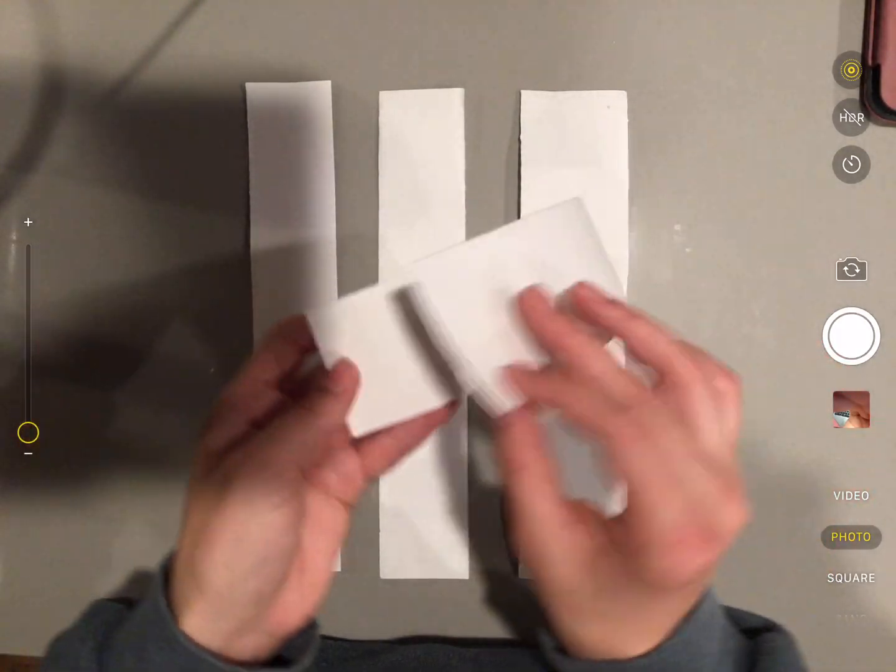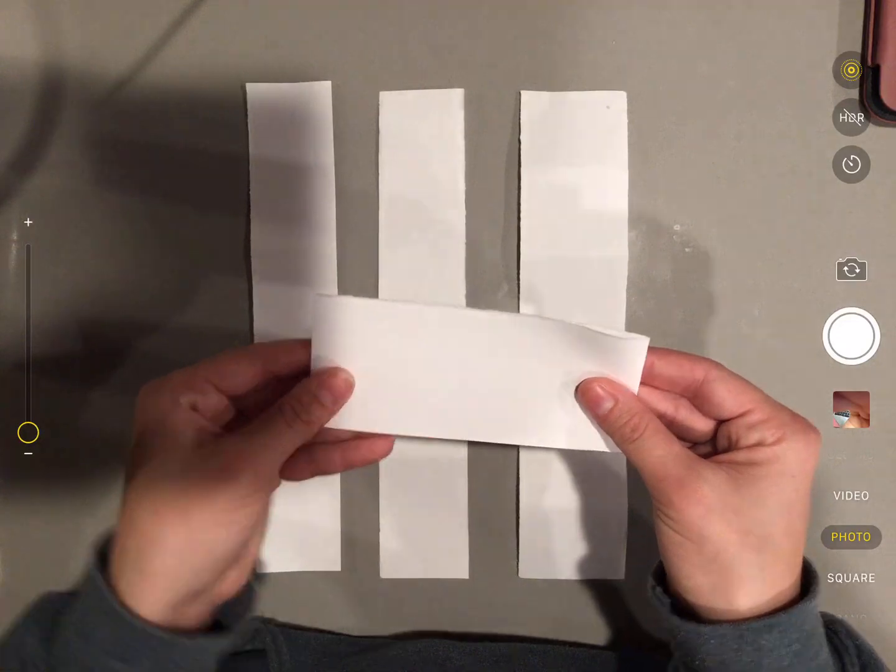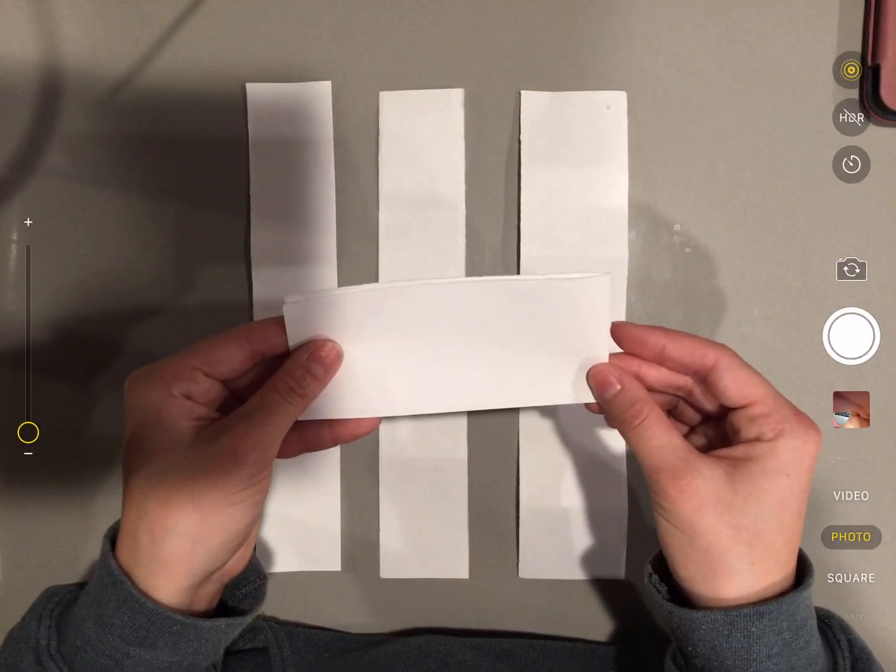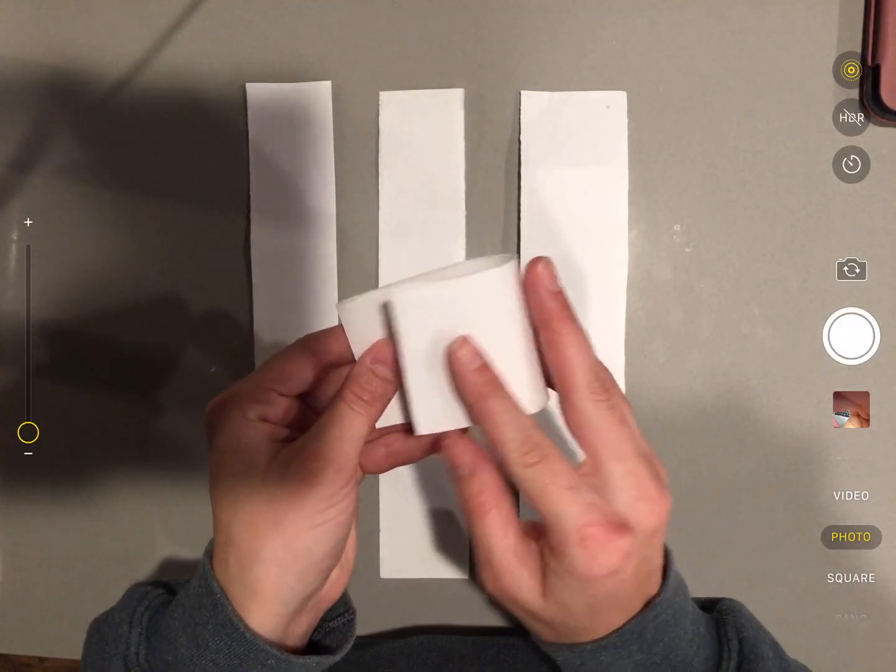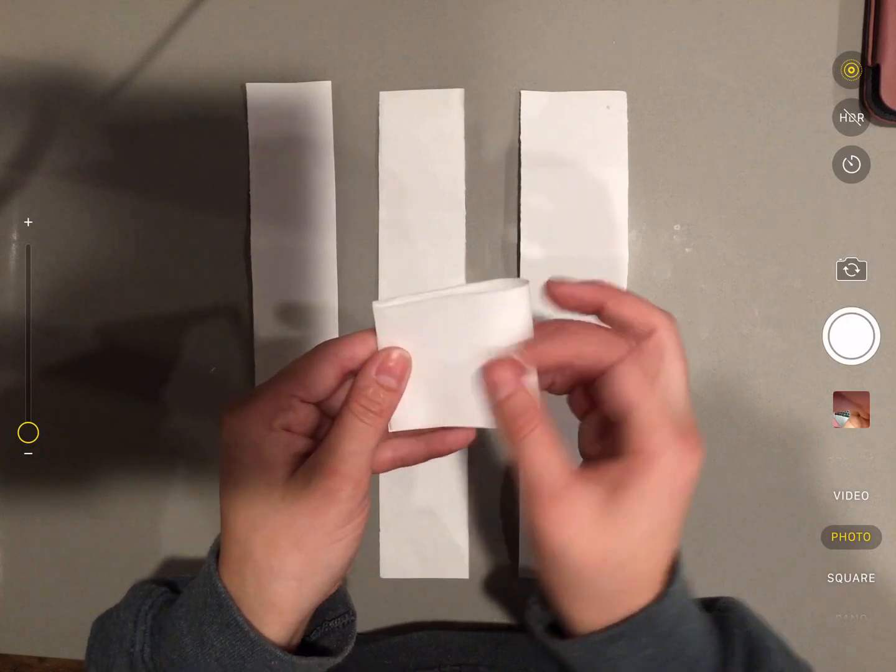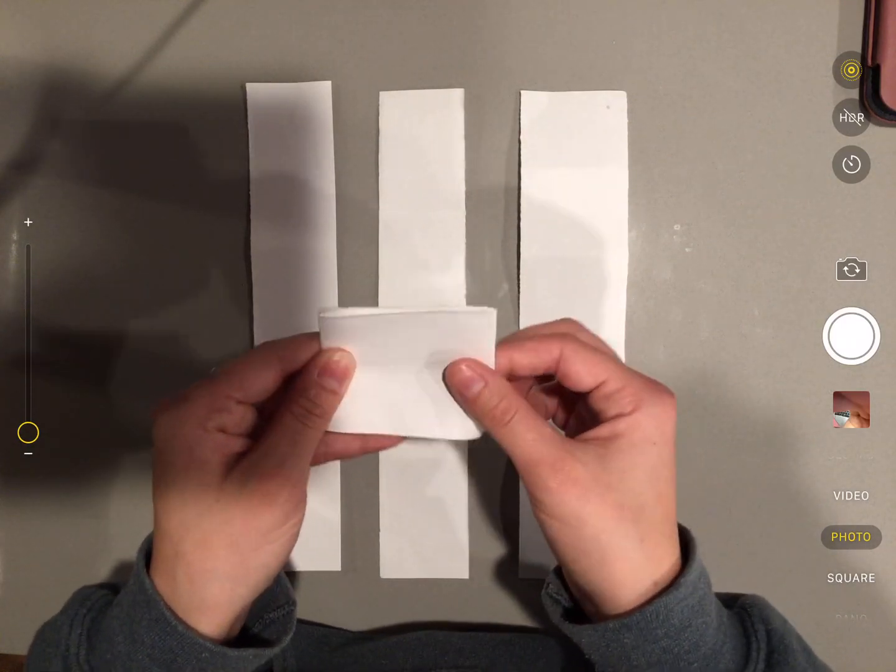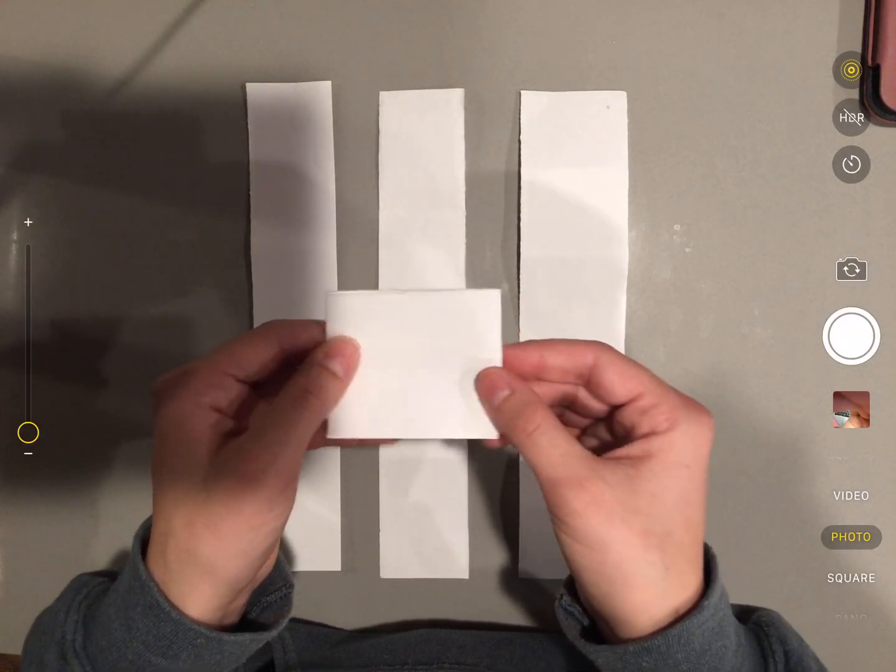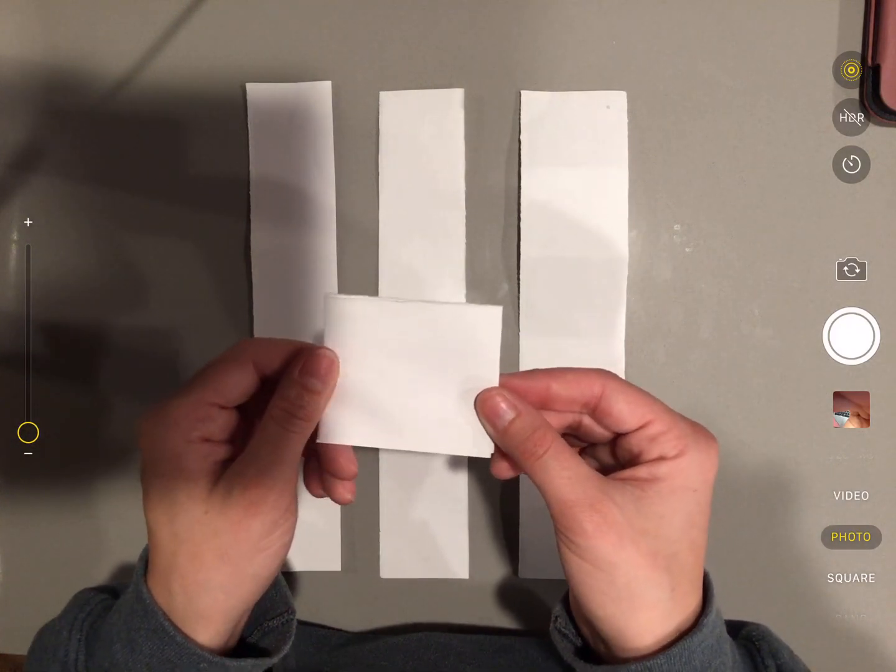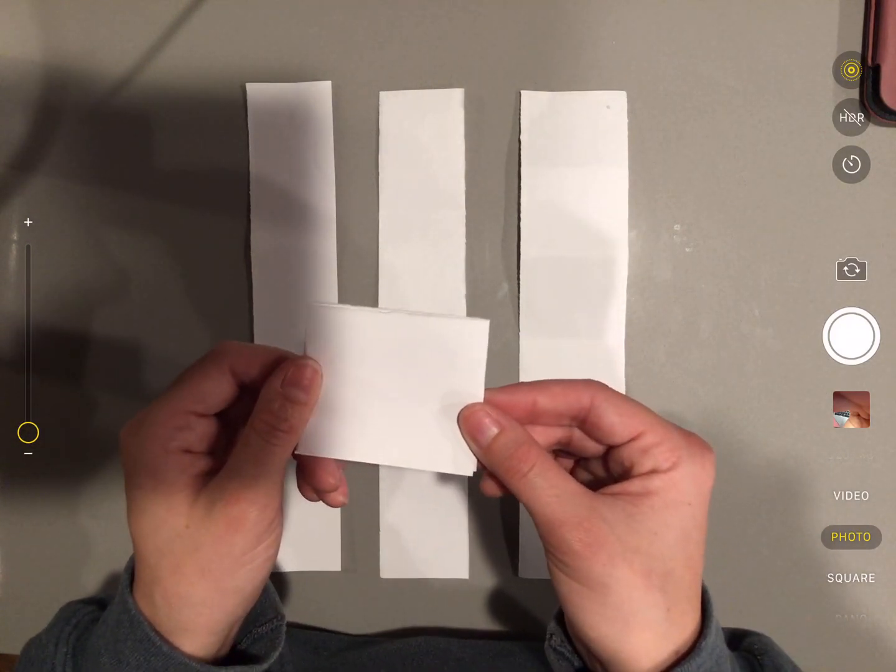Now, I'm going to fold it in half again, just like this. And then I'm going to fold it like this. And I want to ask you, how many equal parts do you think we will have once I unfold this piece of paper?